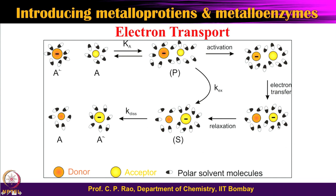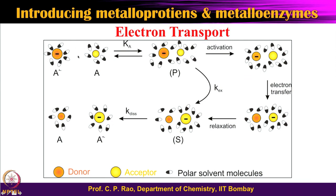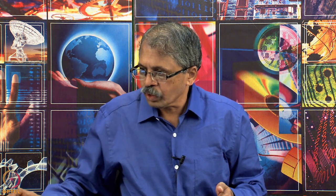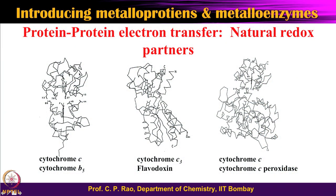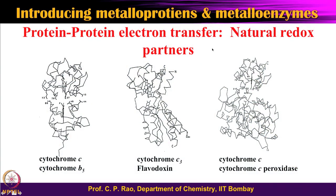We now understand that electron transfer can happen — whether you take a simple ion with solvent molecules, a coordination complex with ligand molecules, or a protein where the metal ion is surrounded by amino acids or heme centers. Now let us move from the conceptual level to where two proteins are involved, one protein acting as a donor and the other as an acceptor. We call these natural redox partners: the donor and acceptor in a redox process.